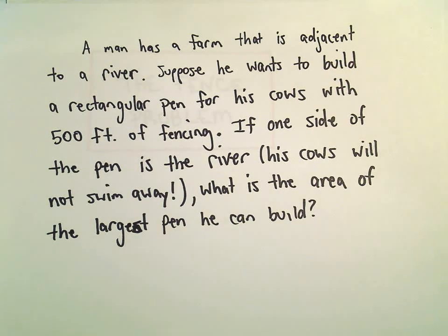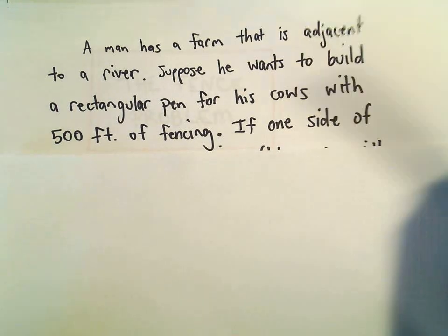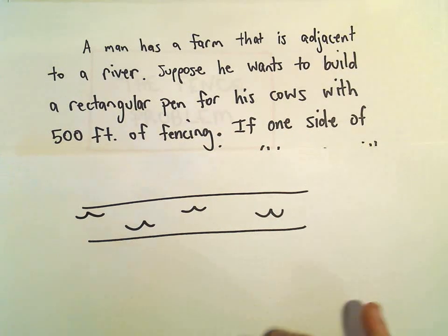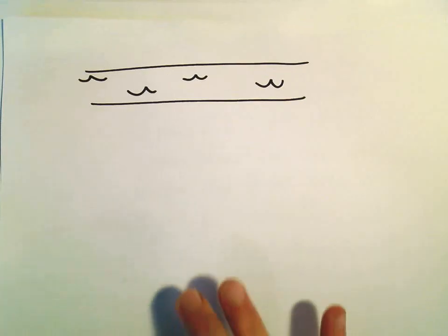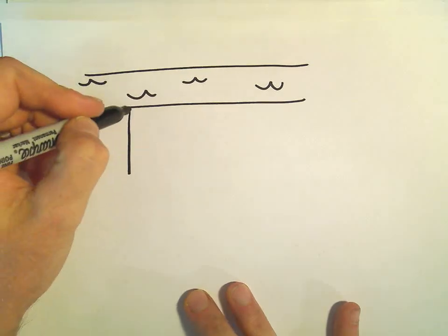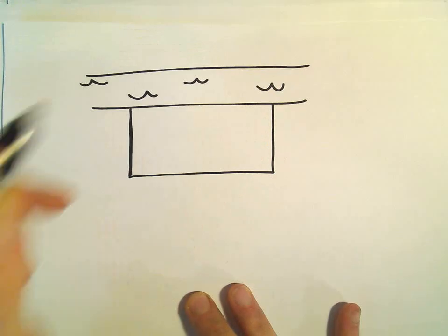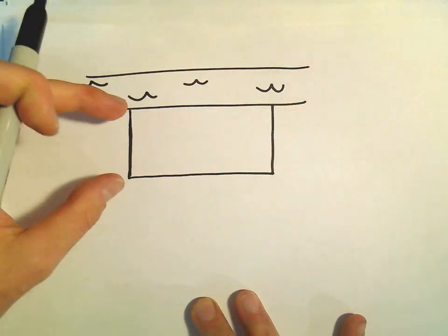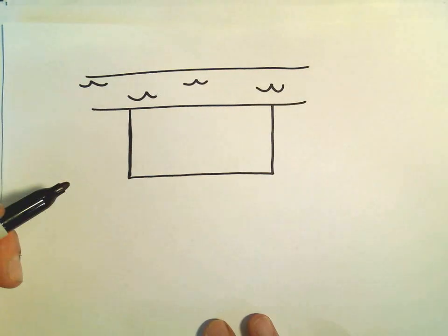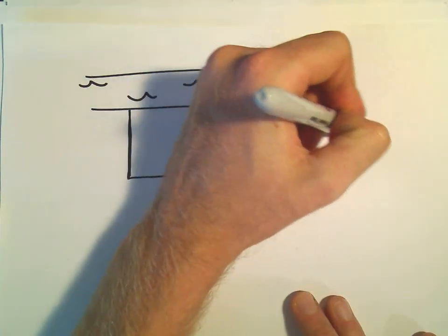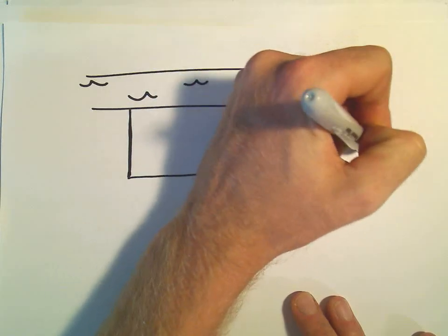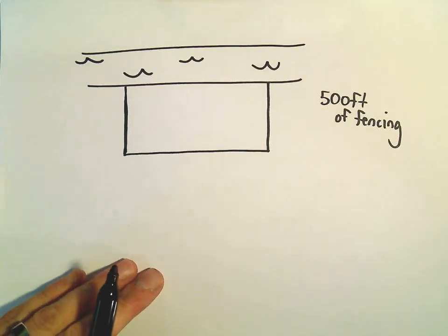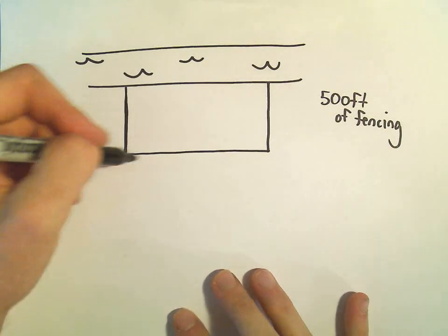Alright, so I'm just going to sketch a little picture here to try to make some sense out of this. So maybe there's the river. There's the nice river there. He's going to build a rectangular pen, so I'm just going to draw a generic little rectangle. So there is his rectangle. And the idea is we could make it sort of longer but not as wide, or maybe wider but not as long. We want to know which one's going to give us the maximum area. So he has 500 feet of fencing. And what I'm going to do is I'm just going to make a little equation to sort of represent the situation.